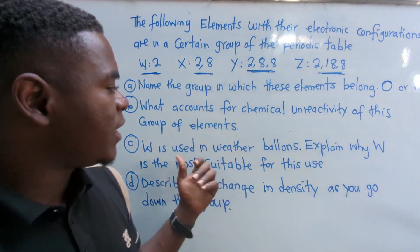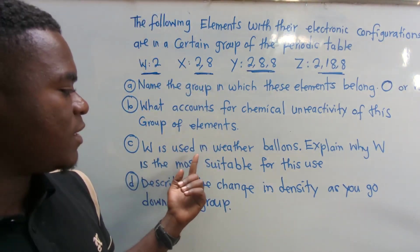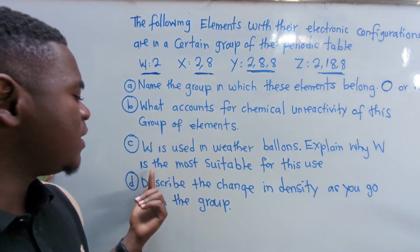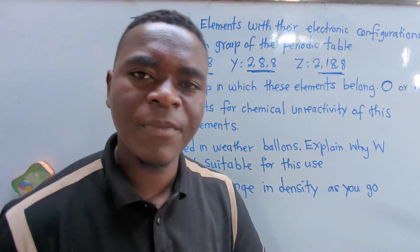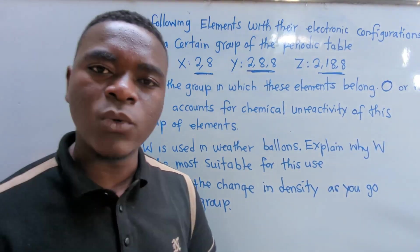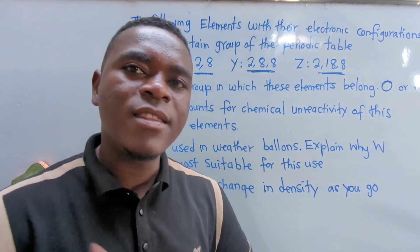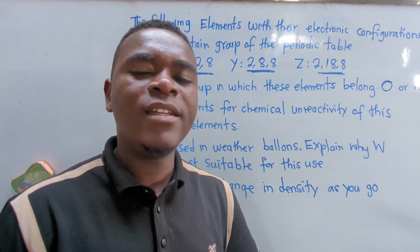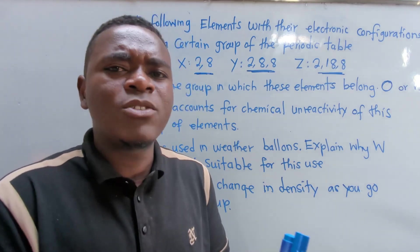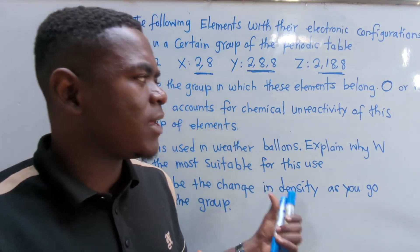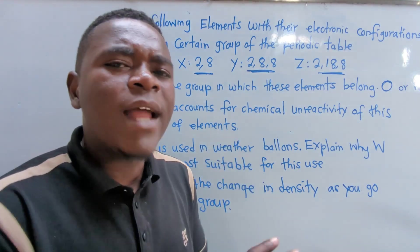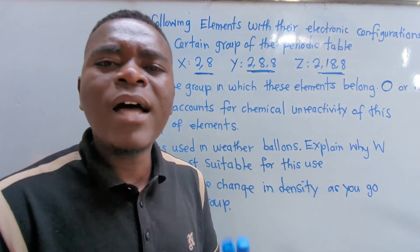Then we move down to the next question. W is used in weather balloons. Explain why W is the most suitable for this use. So if you check W, W is this one. Why is it that it is used in balloons? It is because this one is lighter than air. You now discover that it is able to float and makes it to go higher. So that is the reason why this one is used in weather balloons, because this is more lighter than air and it is unreactive.